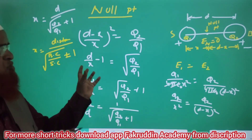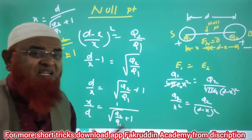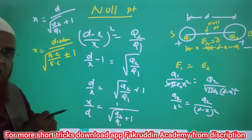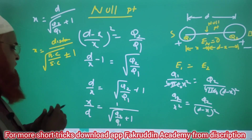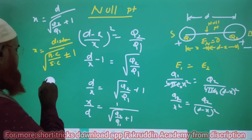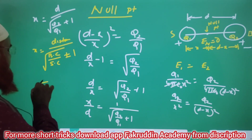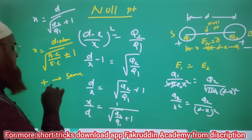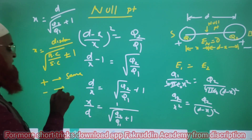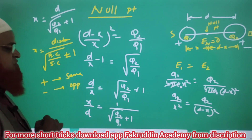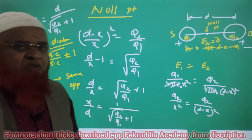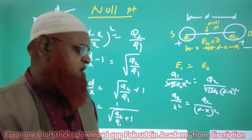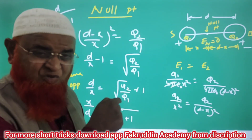That means Q2 should always be the bigger charge — bigger charge comes in the numerator and smaller charge comes in the denominator. You will get plus when the charges are the same, and you will get minus when the charges are opposite. So this is the concept explanation. Next, I will discuss two examples related to this topic.